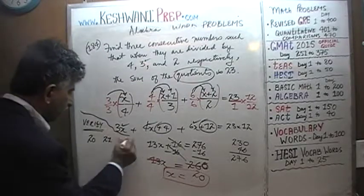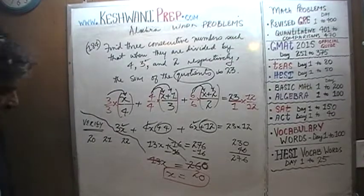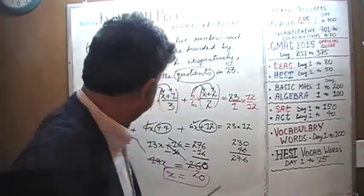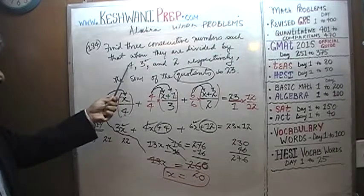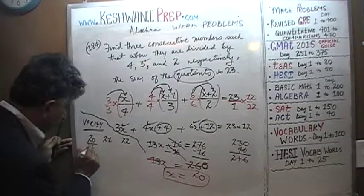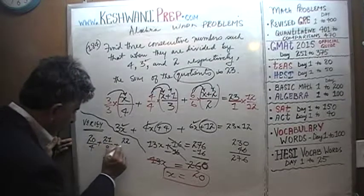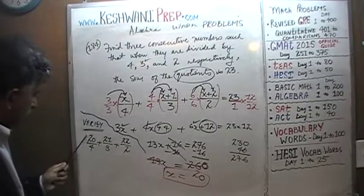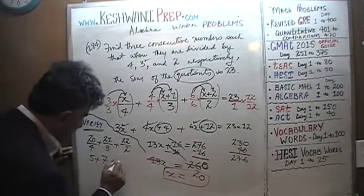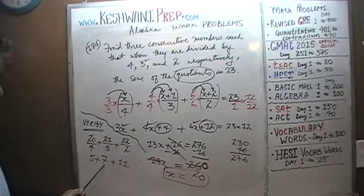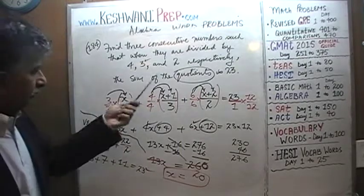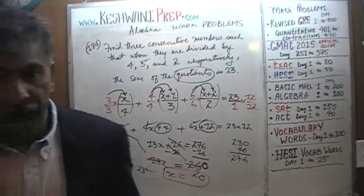What we need to do is make sure our work is correct, so we'll verify it. We are claiming the three consecutive numbers are 20, 21, and 22. The problem tells us that if we divide them by 4, 3, and 2, the quotients should add up to 23. So: 20 divided by 4 is 5, 21 divided by 3 is 7, and 22 divided by 2 is 11. 5 plus 7 is 12, and 12 plus 11 is 23. It checks out — the work is correct.